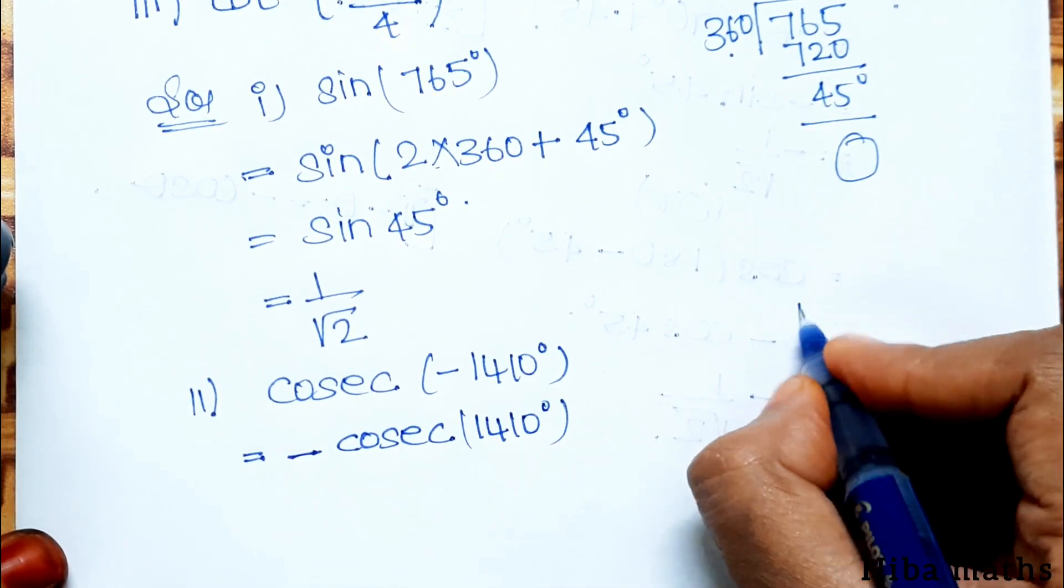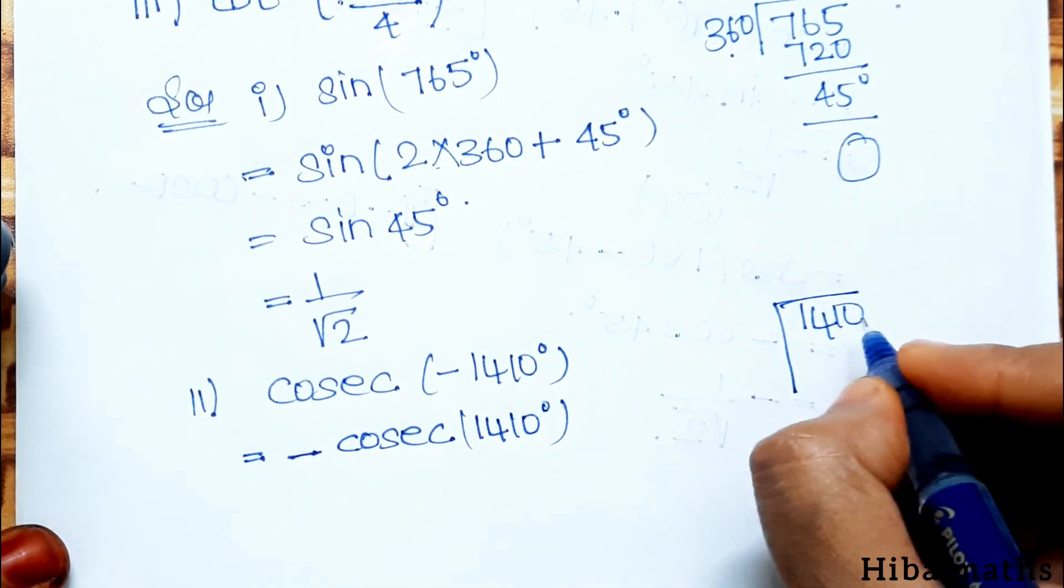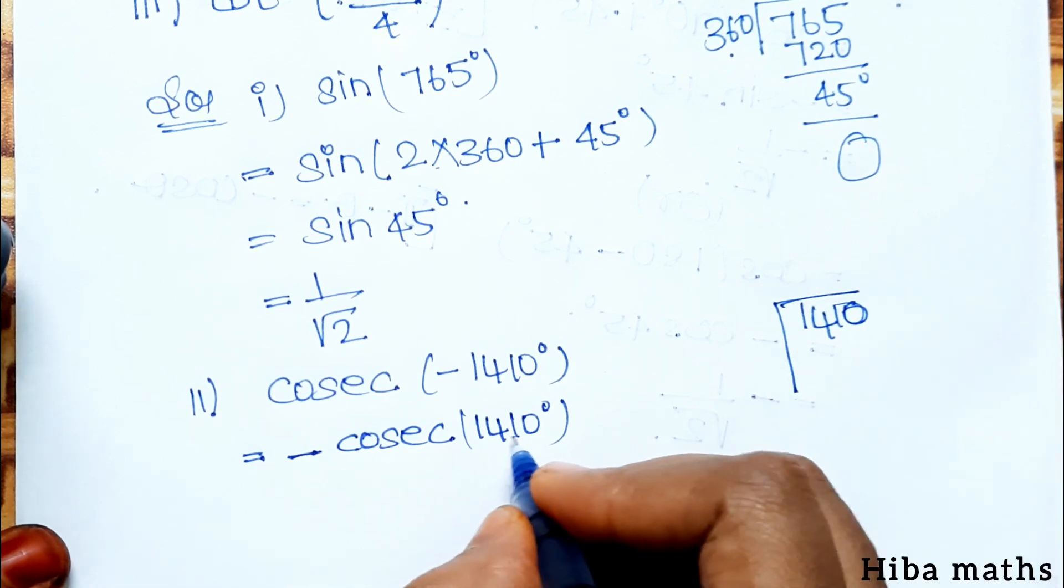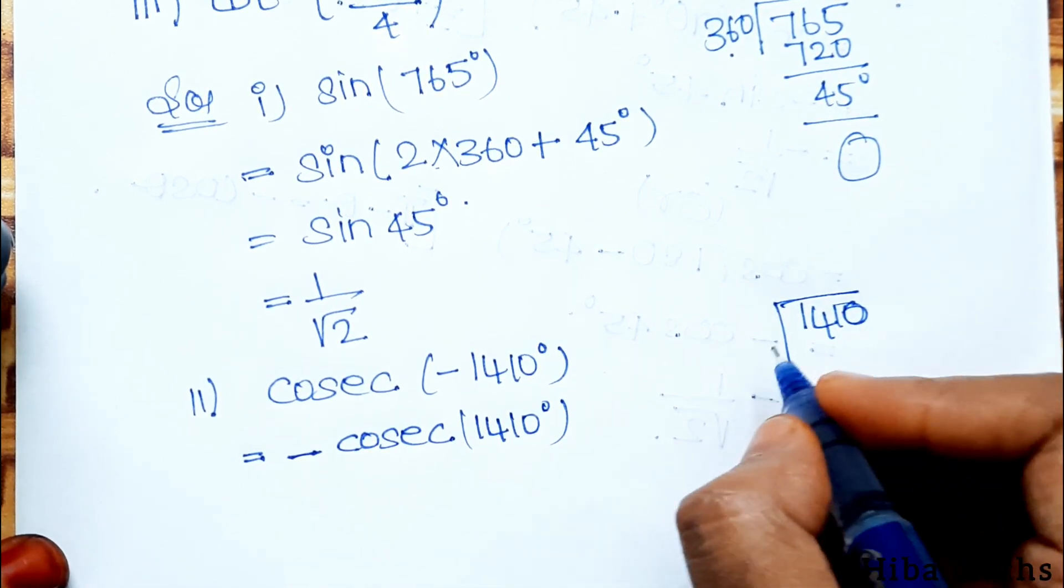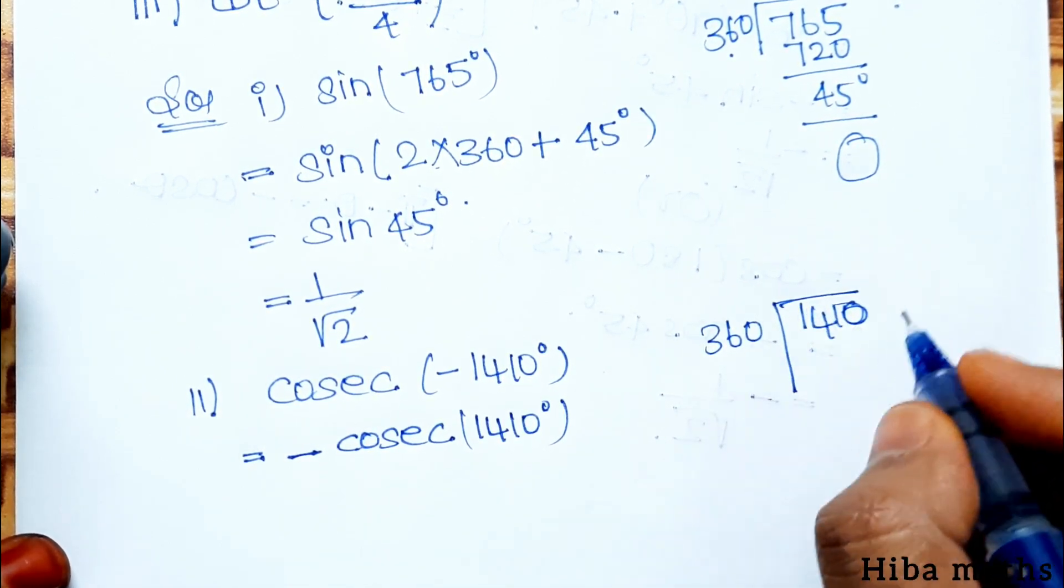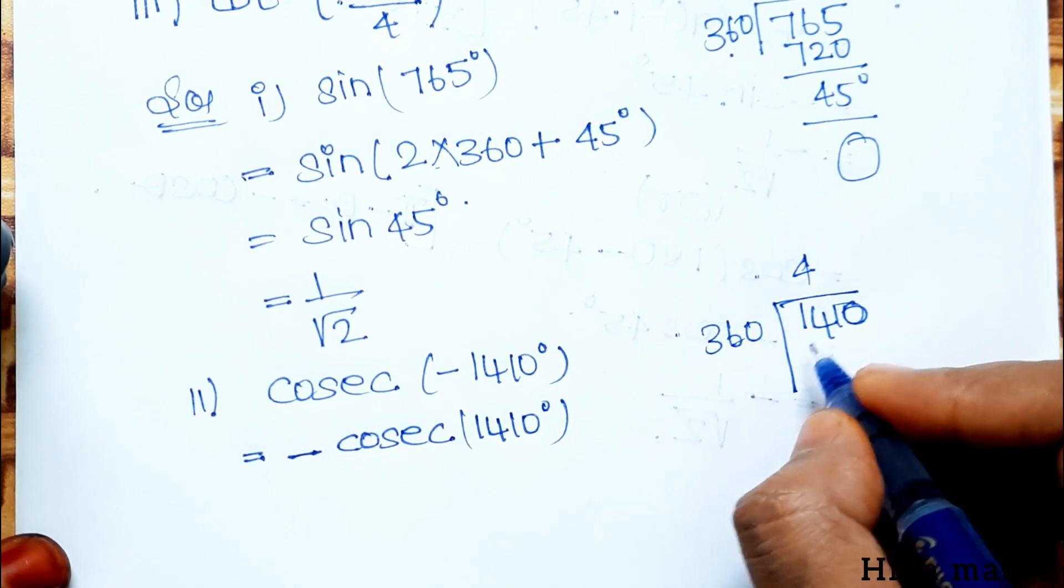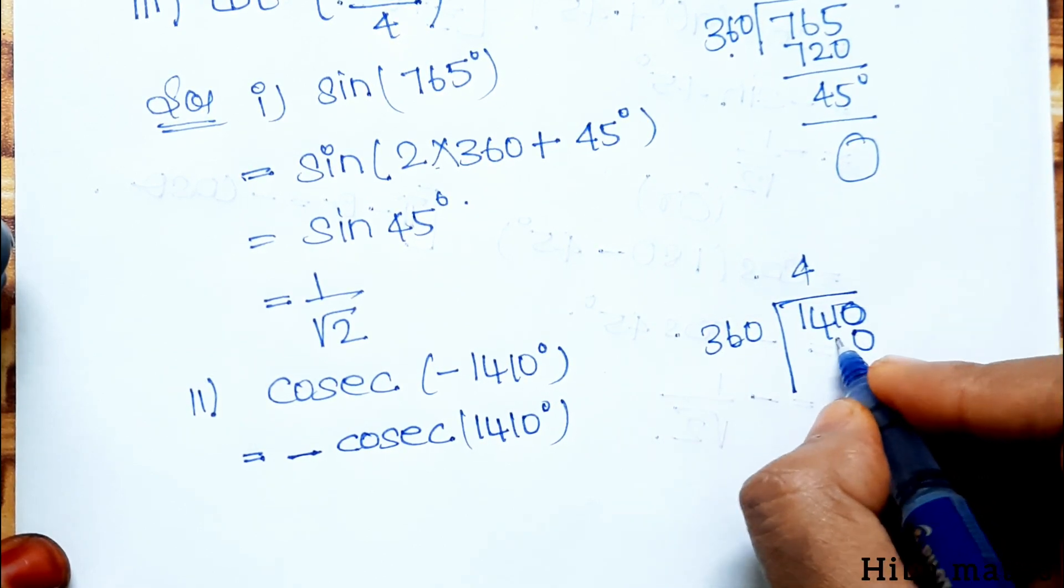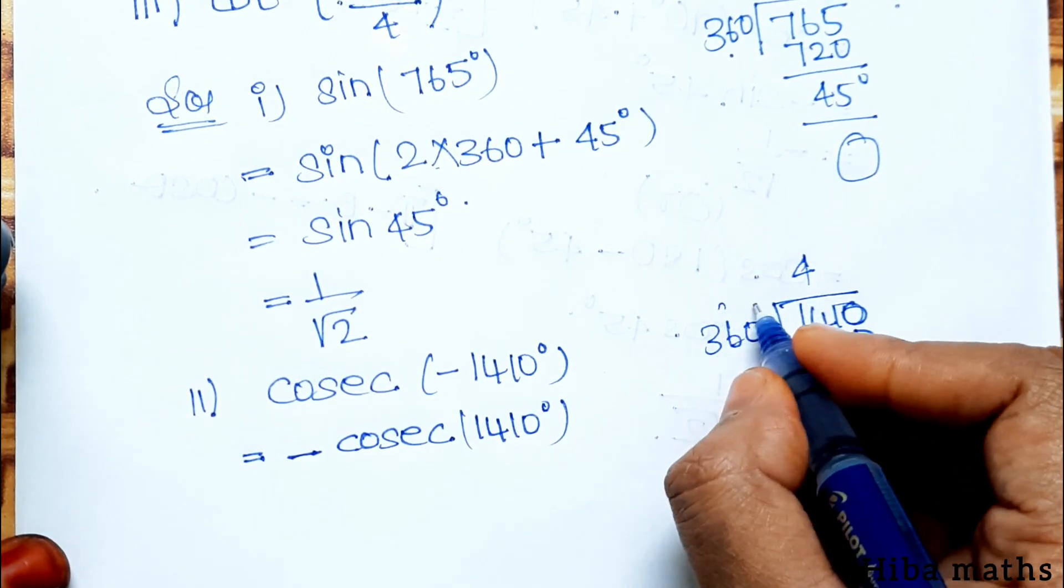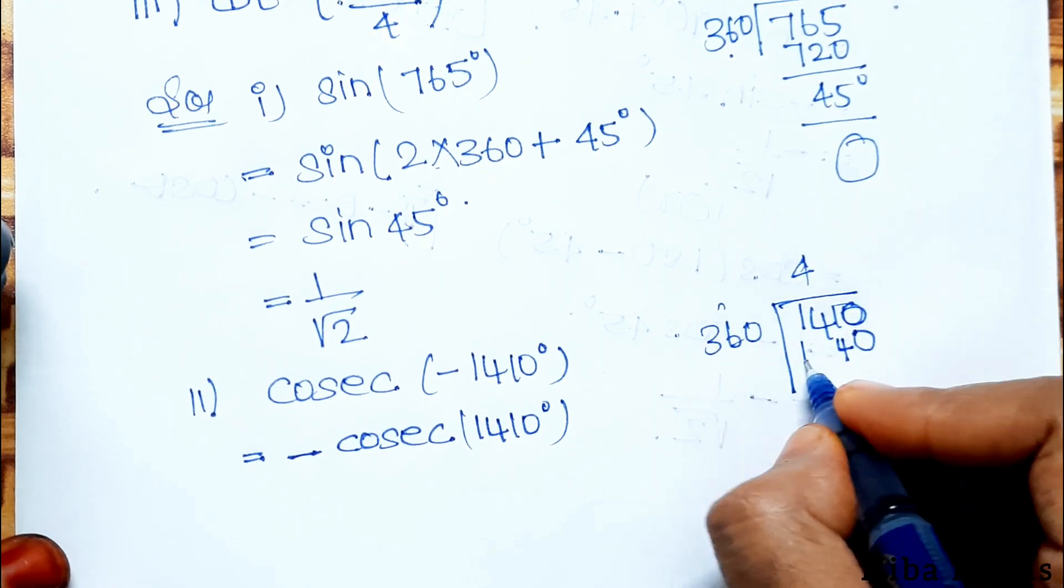Now divide 1410 by 360. This gives us 4 times 360 with remainder 30.